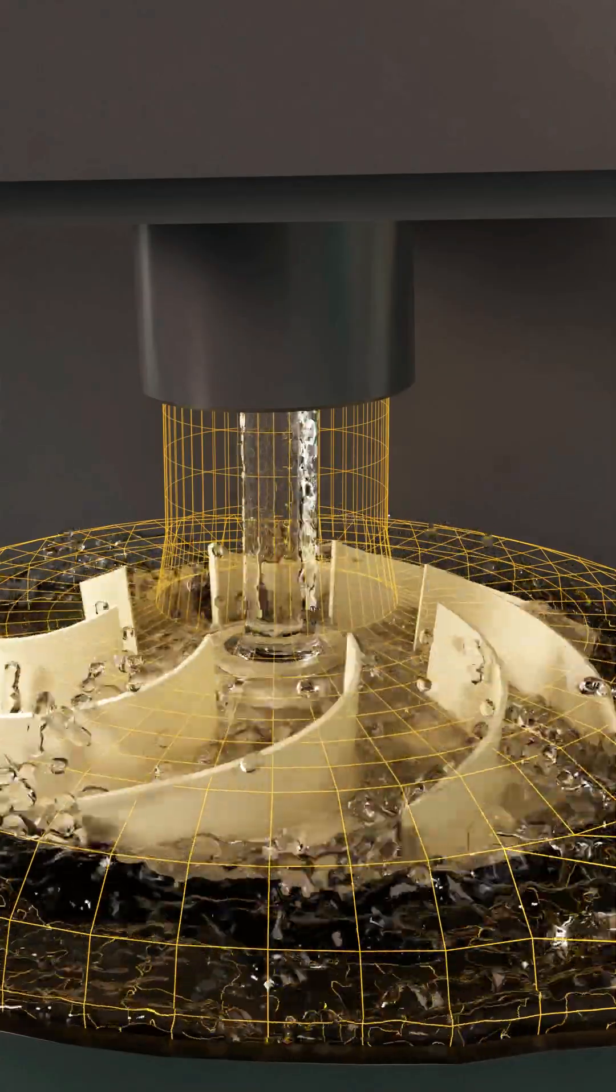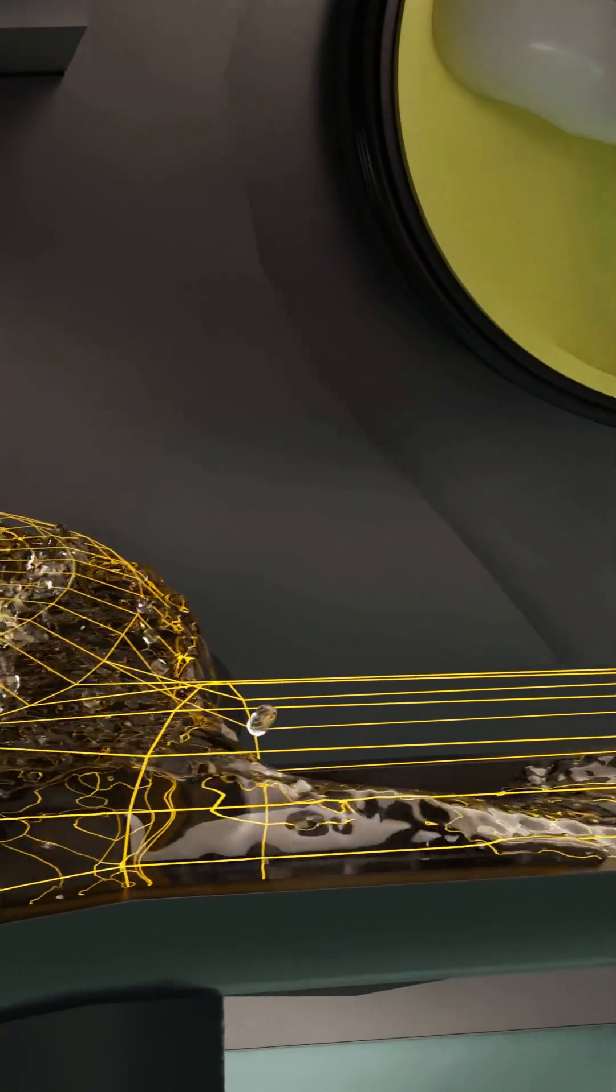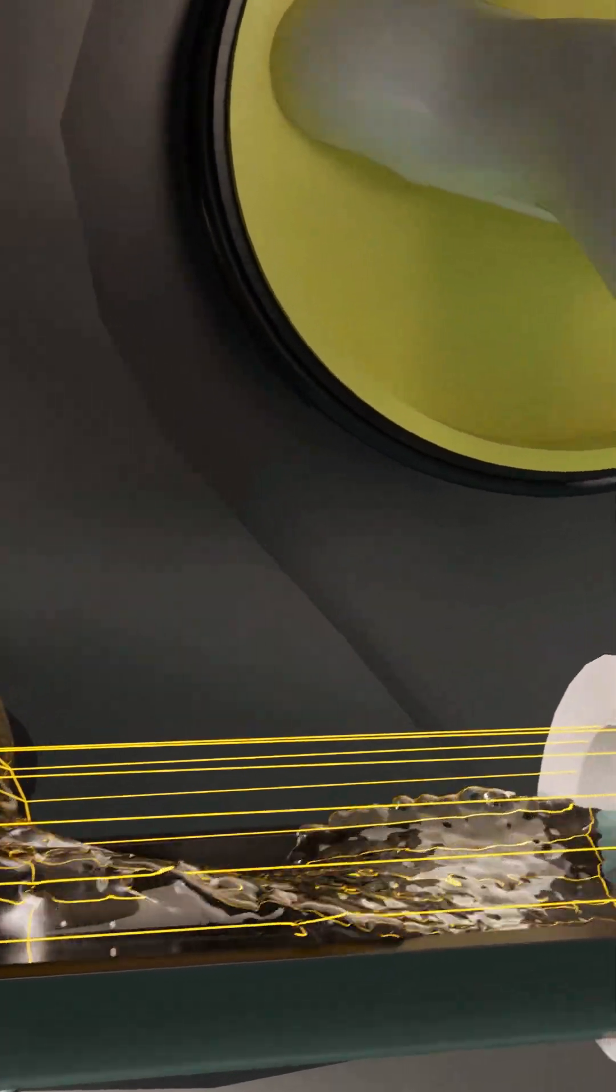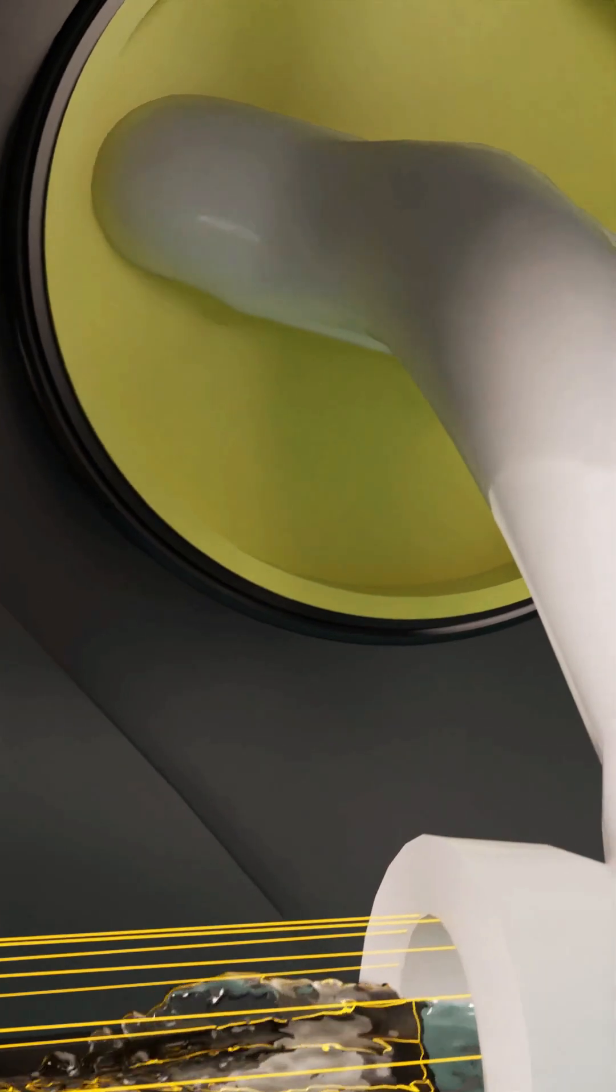This high-pressure flow moves decisively upward, directly feeding into the spray arm system above, where it's prepared for distribution within the dishwasher.